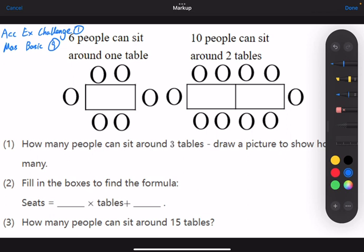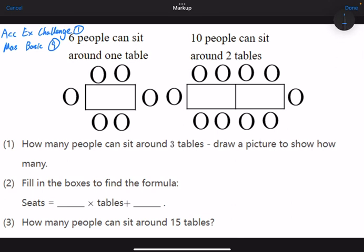So six people can sit around one table. Ten people can sit around two tables. Question number one: how many people can sit around three tables? Draw a picture to show how many.